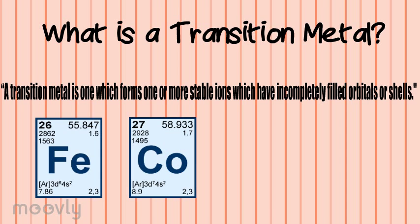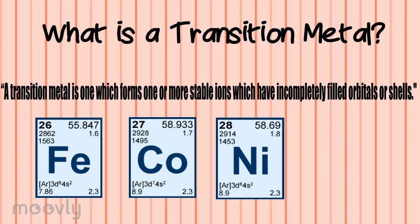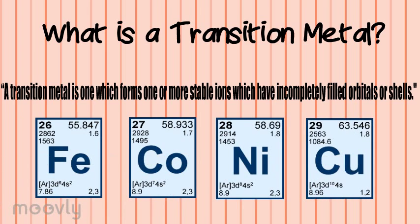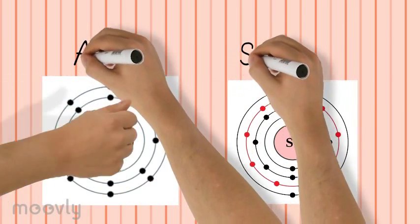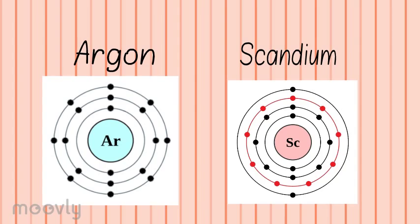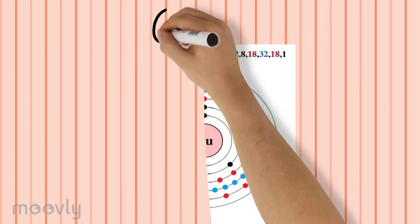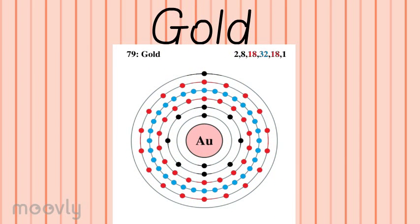The widely accepted definition is that a transition metal is one which forms one or more stable ions which have incompletely filled orbitals or shells. To put this in perspective, take a look at argon. It's a noble gas which has two electrons in its first shell, eight in the second, and eight in the valence shell. Scandium, which is a transition metal, only has three more electrons than argon, but its electron setup looks like two in the first shell, eight in the second, nine in the third, and two in the valence shell. Transition metals are able to exceed the eight electron limit, going up to 18 and even 32 like in gold. Therefore, when scandium has nine electrons in its third shell, it's incompletely filled.